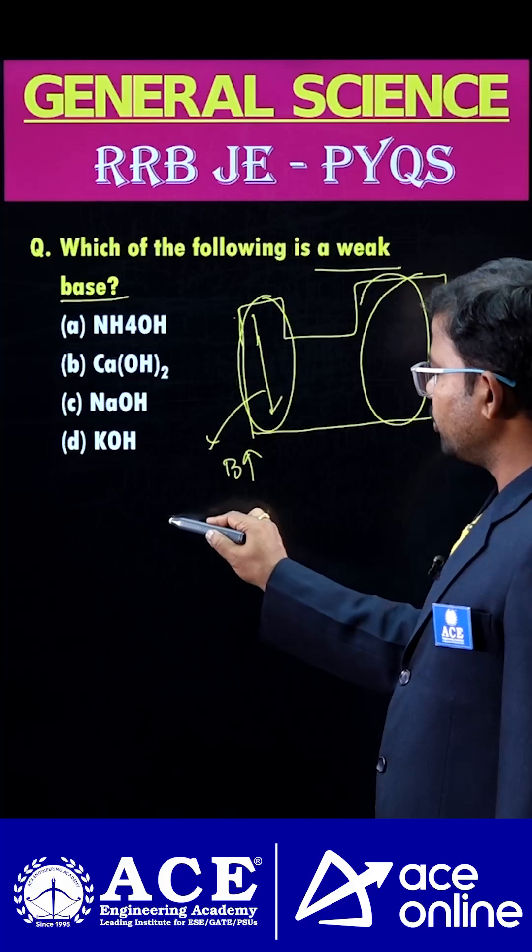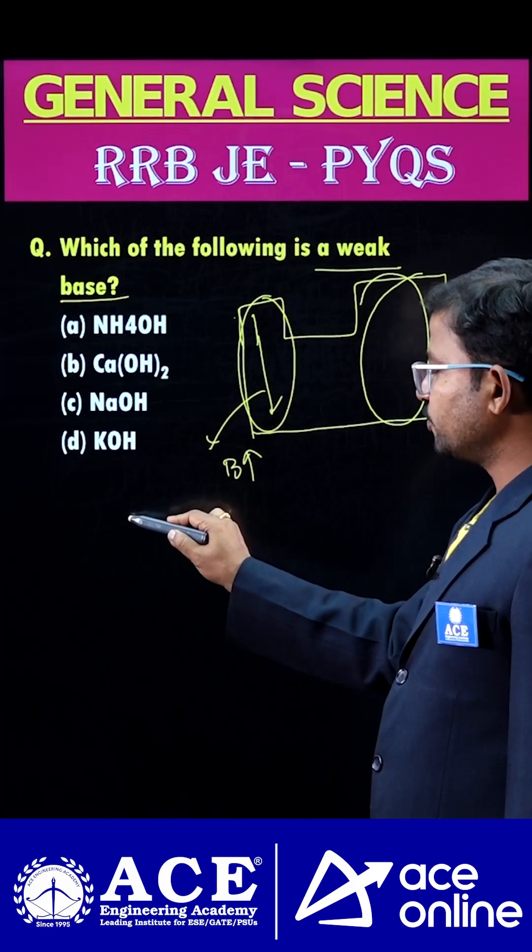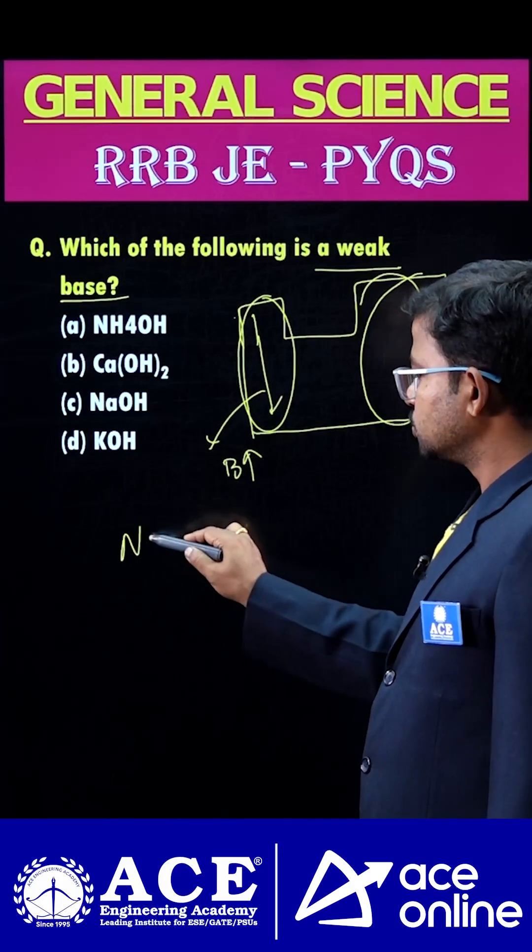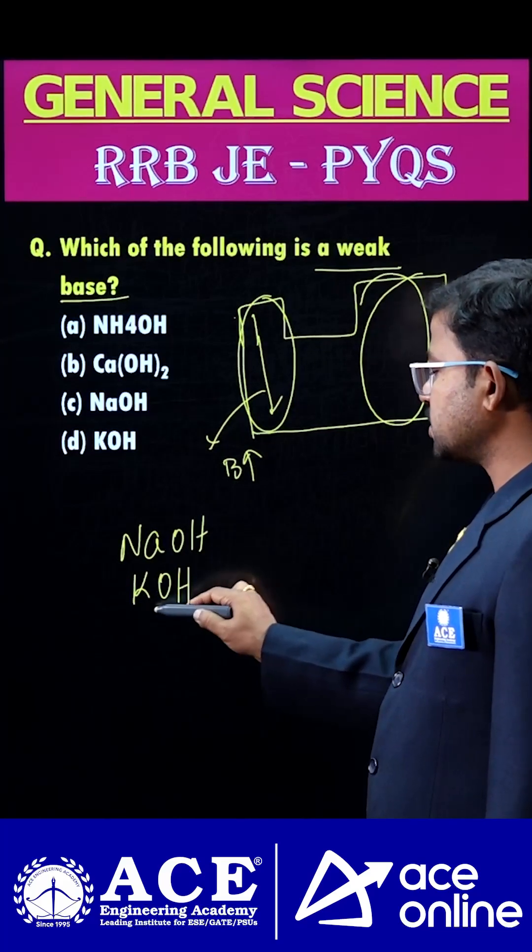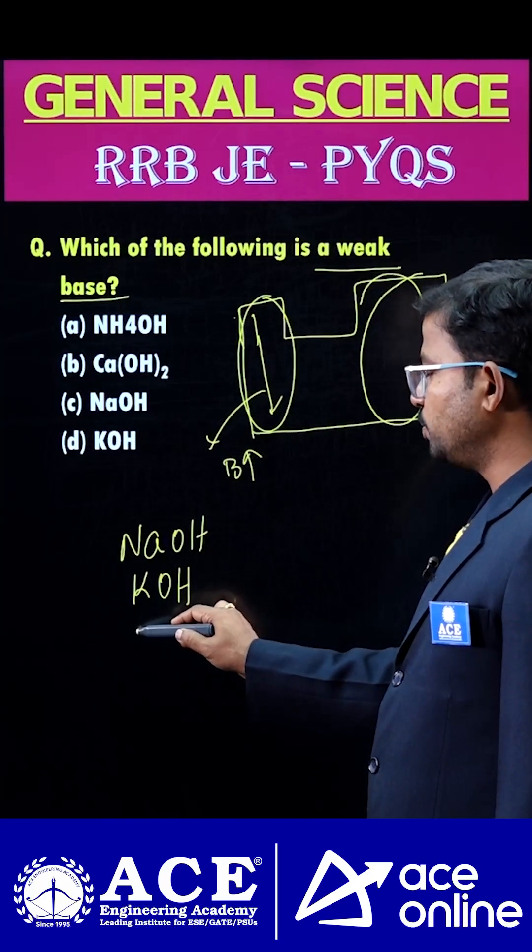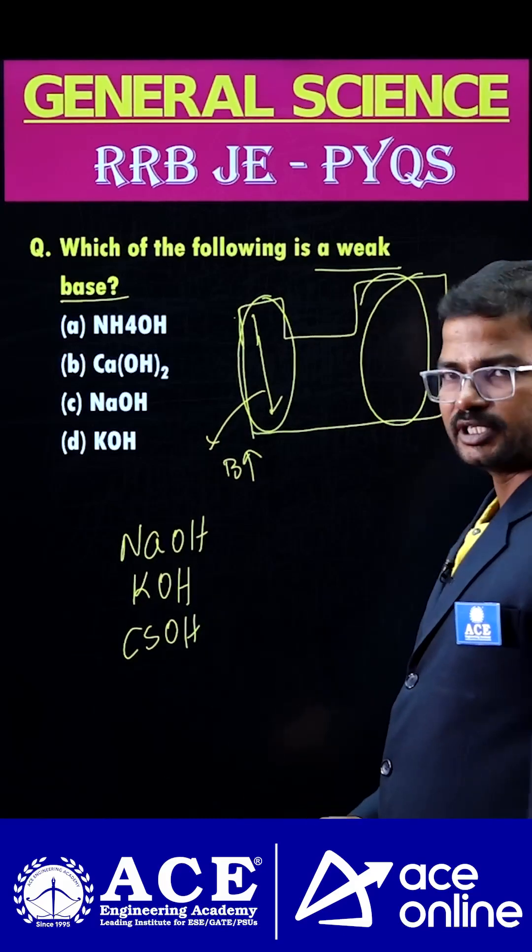So finally guys, if you consider first group, actually what we have? Lithium, sodium, sodium hydroxide, next potassium, potassium hydroxide, cesium hydroxide, rubidium hydroxide. These are all considered as strong bases.